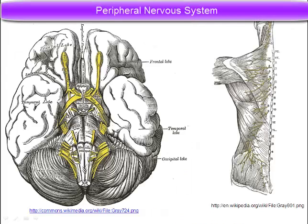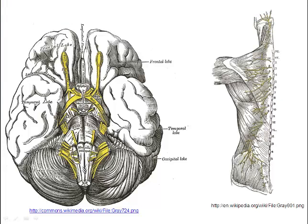The peripheral nervous system lies outside the spinal cord. Here we see it colored yellow. These are the peripheral nerves. The peripheral nervous system is composed of three types of nerves.